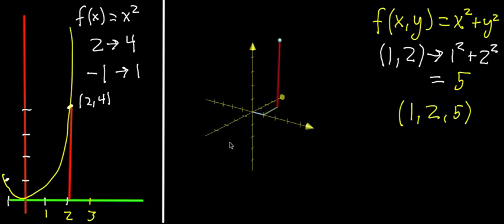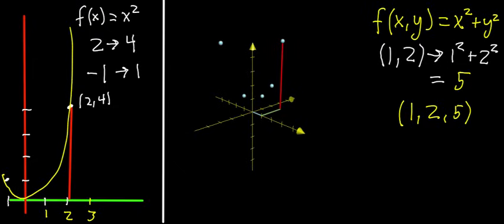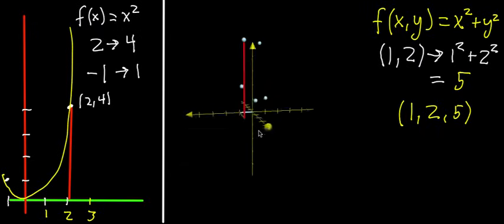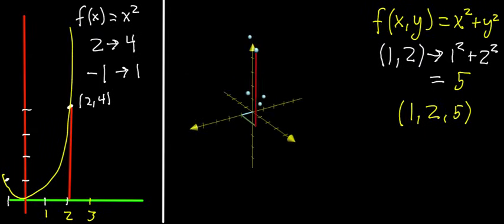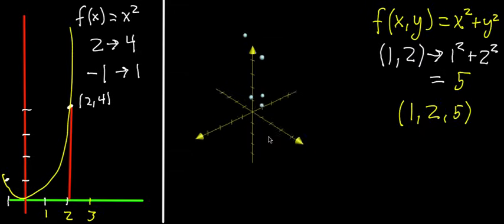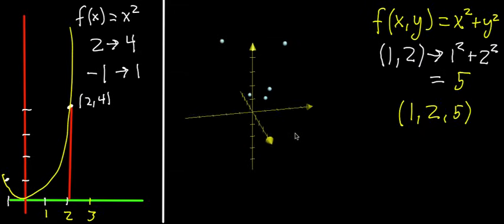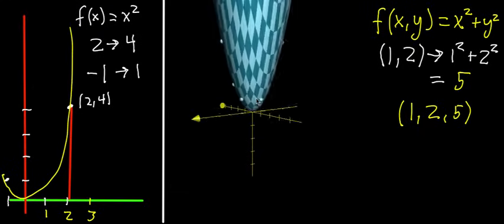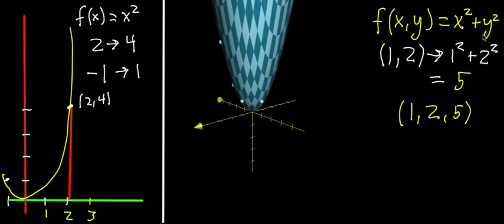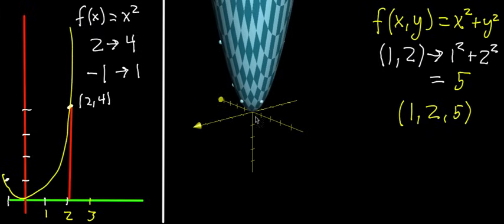But we could do this for a lot of different points. There's infinitely many that you can do, and it'll take forever if you try to just draw each one in three dimensions. But what's very nice here is that if you imagine doing this for all of the infinitely many pairs of inputs that you could possibly have, you end up drawing a surface. In this case, the surface looks like a three-dimensional parabola. That's no coincidence. It has to do with the fact that we're using x² and y² here.